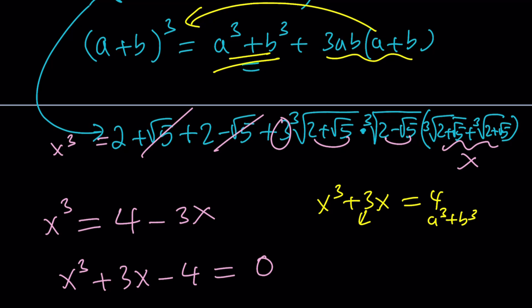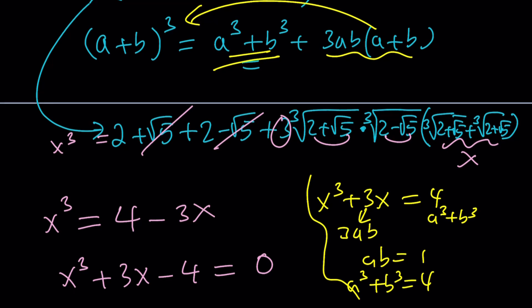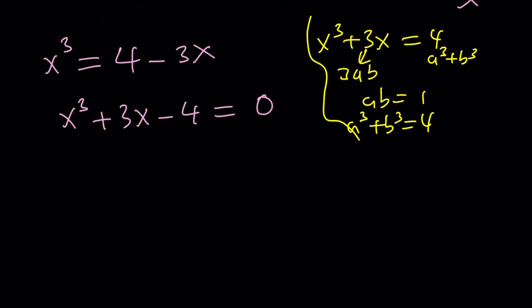And then from here, ab is going to be 1. a cubed plus b cubed is going to be 4. And you just have to solve the system. And then find the values of a and b, and so on and so forth. Anyways, that's another story. That's the cubic formula. We're not going to do it because this equation is so easy to solve.